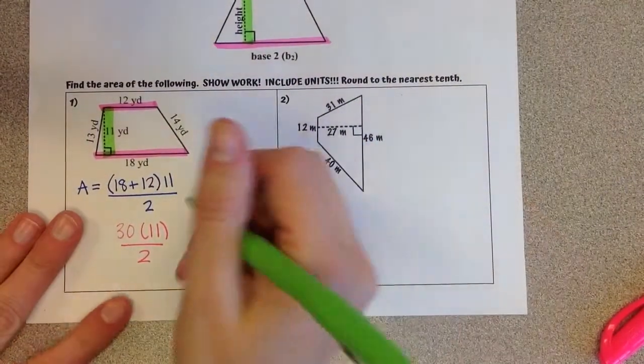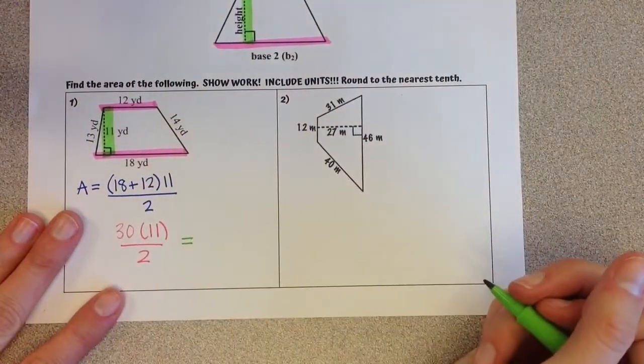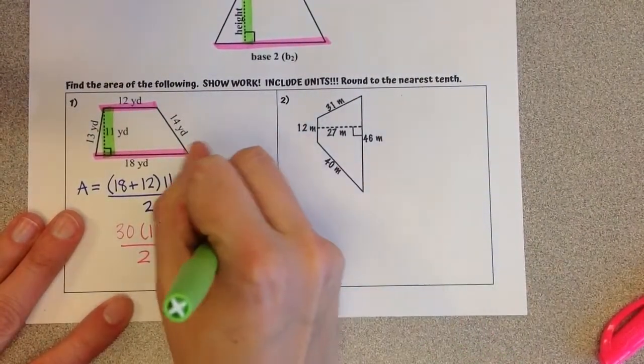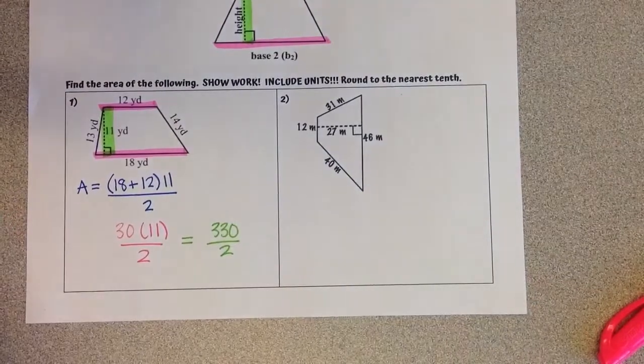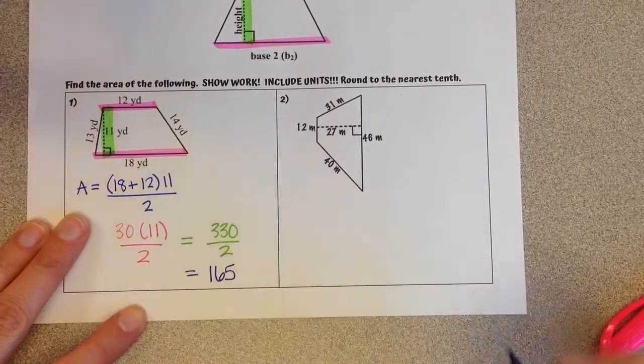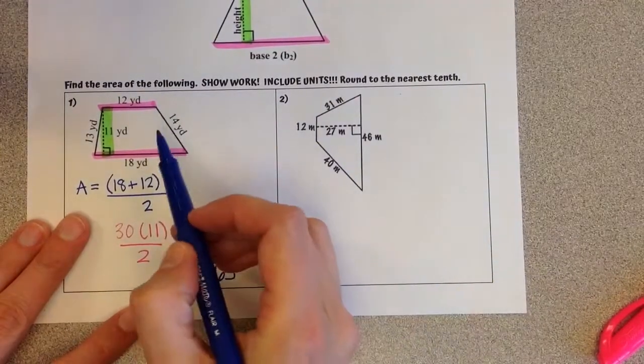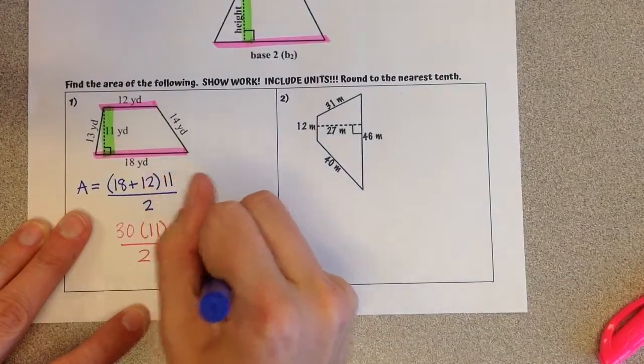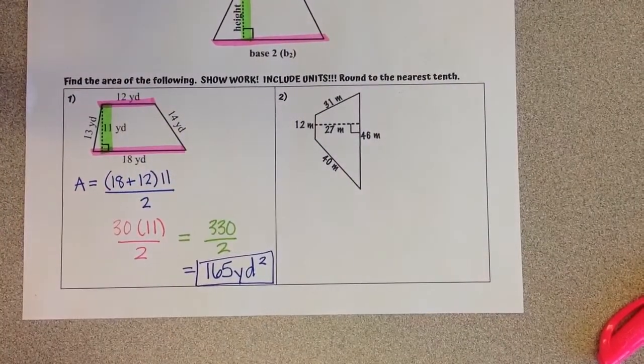So 30 times 11, now we do before we divide, 30 times 11 is 330, divided by 2, gives us an answer of 165. We're talking about yards, and area is always squared, so 165 yards squared.